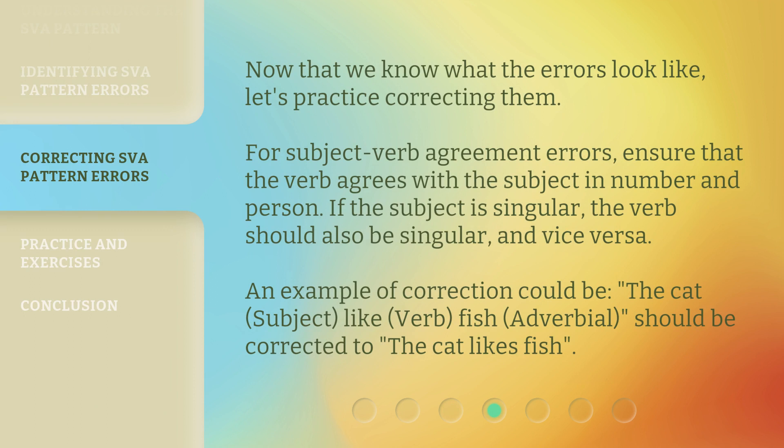Now that we know what the errors look like, let's practice correcting them. For subject-verb agreement errors, ensure that the verb agrees with the subject in number and person. If the subject is singular, the verb should also be singular, and vice versa. An example of correction could be: 'The cat (subject) like (verb) fish (adverbial)' should be corrected to 'the cat likes fish.'